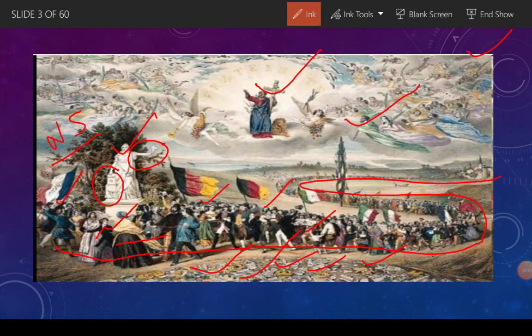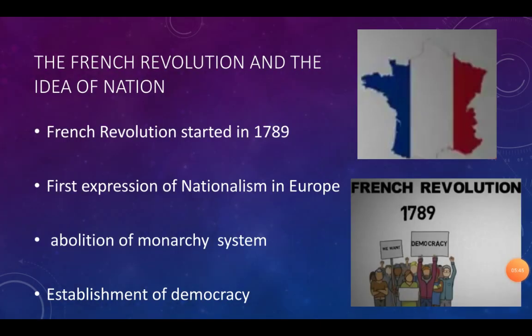Yahaan maine aapko ek word 'nation' bataya hai - then what is a nation? Ernest Renan thay ek French philosopher, unhonne nation ki ek bahut acchi definition di thi. Unhonne kaha: 'A nation is the result of a long past of endeavors, sacrifices and devotion.' Jo rashtra hota hai, woh ek lambe ateet mein kiye gaye lambe prayason, tyaag aur samarpan ka parinaam hota hai. Uske baad hum French Revolution par aate hain, kyunki nationalism ka yeh idea kahaan se emerge hua tha - French Revolution se.